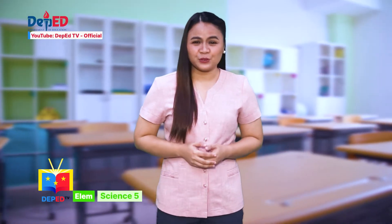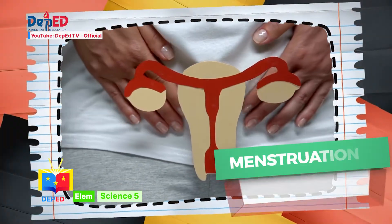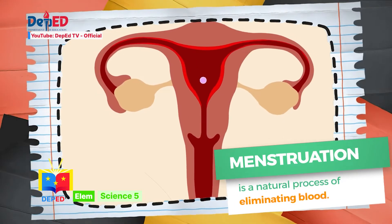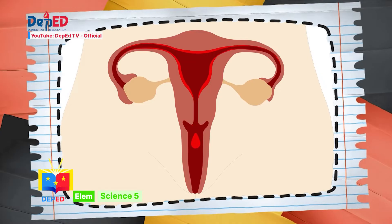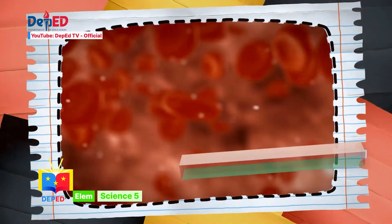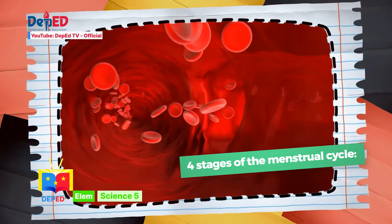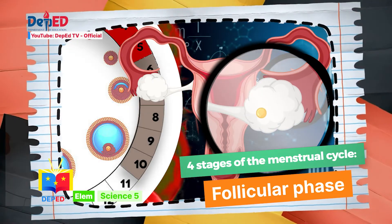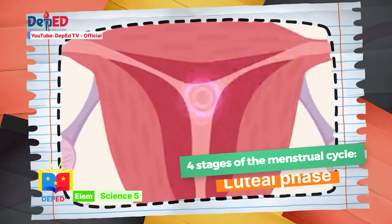In today's episode, we will learn that menstruation is a natural process of eliminating blood, uterine tissue, and unfertilized egg from the uterus through the vagina. And there are four phases of the menstrual cycle: menstrual phase, follicular phase, ovulation, and the luteal phase.